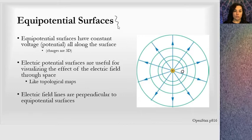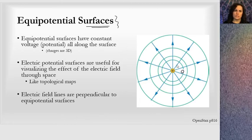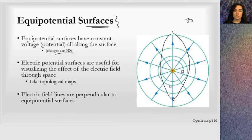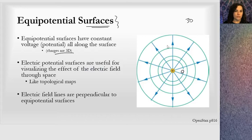These lines are actually called equipotential surfaces when we're looking at electric potential and charges. Equipotential surfaces have a constant voltage along the surface — you may see them called equipotential lines in some textbooks. In a 2D situation we see them as lines, but remember this is a 3D situation. Charges are all 3D, so the surface for a point charge is spherical, and we would use the surface area for a sphere. The electric potential surfaces are useful for visualizing the effect of the electrical field through space.